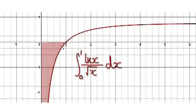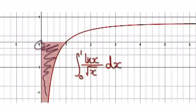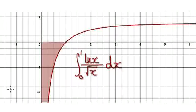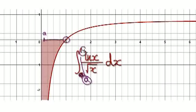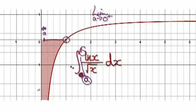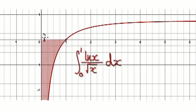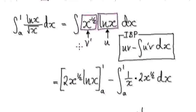Let's give you some more practice — find this area from zero to one. To do this, let's integrate from an arbitrary point, let's call it `a`, all the way to one. Then later on we can allow `a` to head towards zero from the right-hand side. So first step: integrate from an arbitrary point `a` to one.